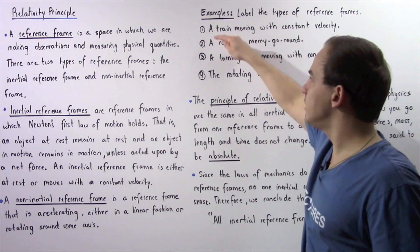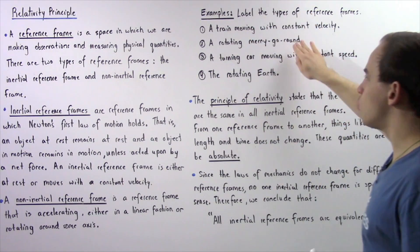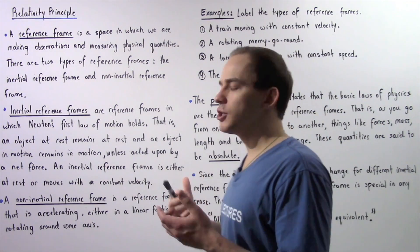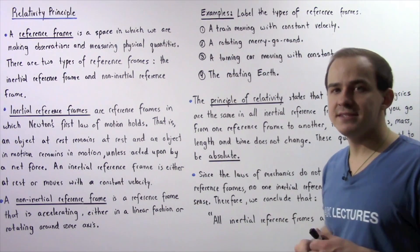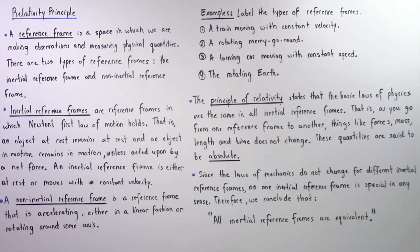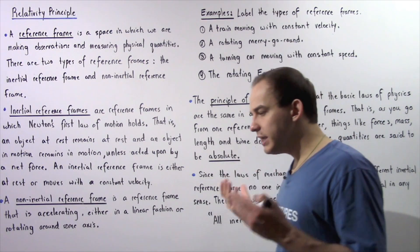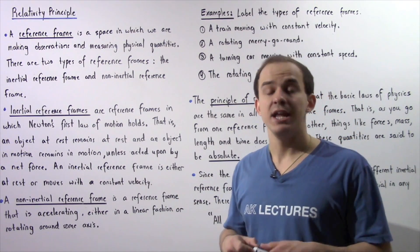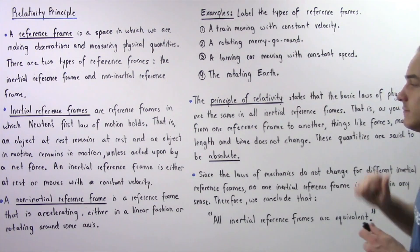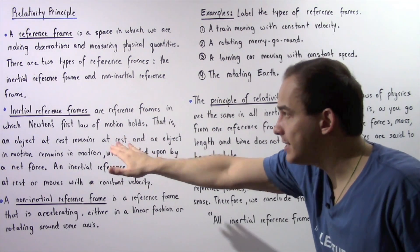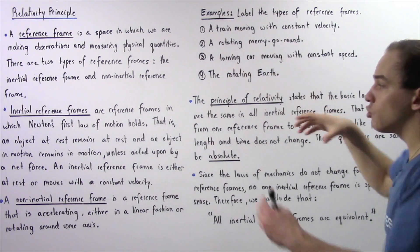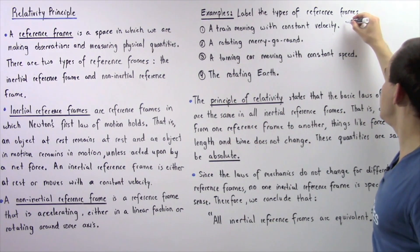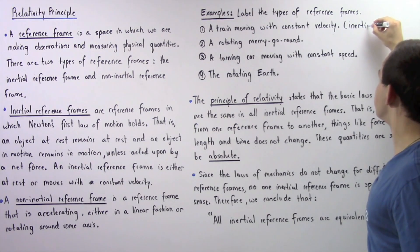Let's look at the following four cases and determine which are inertial reference frames and which are non-inertial. Case number one: a train moving with a constant velocity. If we're inside a train conducting an experiment and the train is moving with a constant velocity, then by definition this is an inertial reference frame.